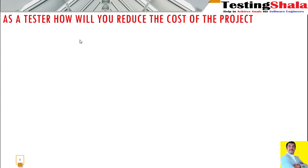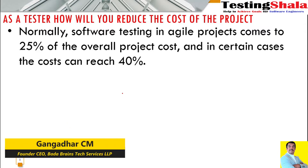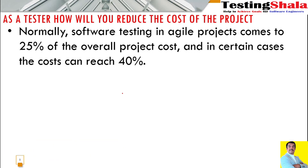As a tester, how will you reduce the overall cost of the testing project? This is a very important question where they want to understand how a tester can put in certain effort to reduce the overall cost. First, we should understand what the overall cost of software testing is. Normally, software testing in agile projects comes around 25% of the overall project cost, and in certain cases it can reach up to 40%. So how can we reduce a portion of this overall project cost by doing things differently?